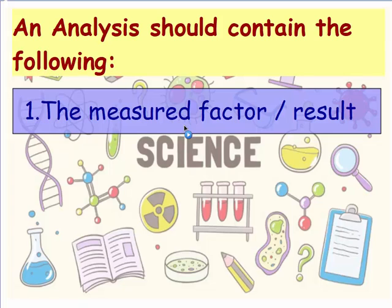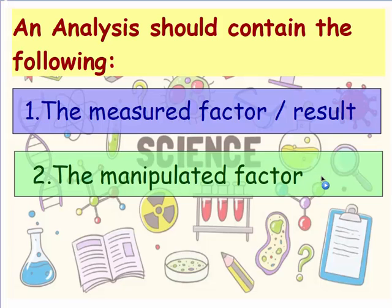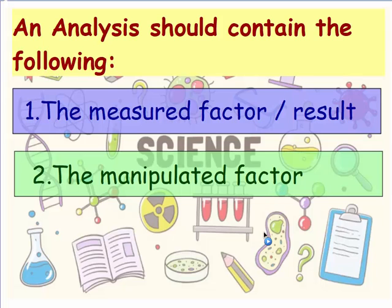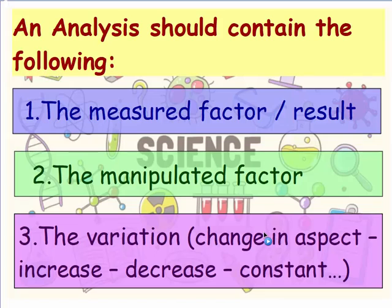An analysis should contain: the measured factor or the result of the experiment, the manipulated factor or the factor that we changed in the experiment, and the variation — which means a change in aspect, an increase in value, a decrease in value, or staying constant.